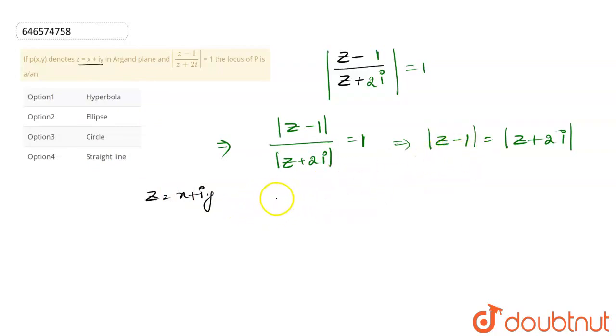So mod z minus i, we substitute mod of x plus iy minus i is equal to mod of x plus iy plus 2i. So what will this become? x minus 1 plus i times y. This is the modulus. Here will be x plus i times y plus 2, the mod.